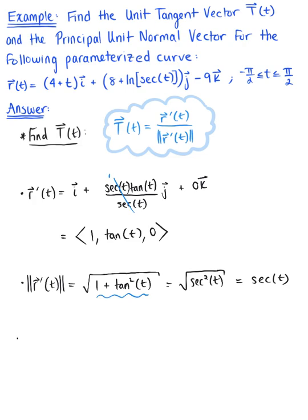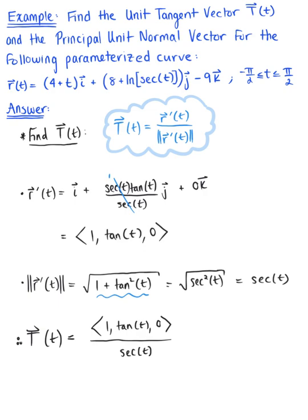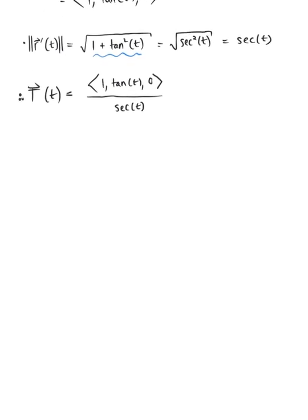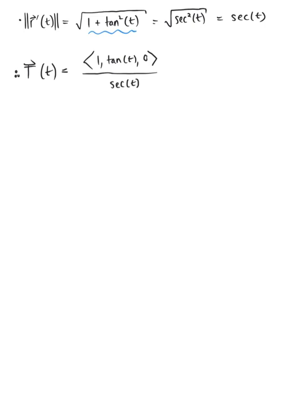We are now able to find the unit tangent vector. Capital T, our unit tangent vector, equals the tangent vector ⟨1, tan(t), 0⟩ all divided by sec(t). Let's simplify — we can see some nice simplification with our trig identities. Distributing the secant through to each component gives us 1/sec(t), tan(t)/sec(t), and 0/sec(t). Let's think about tan(t)/sec(t) carefully.